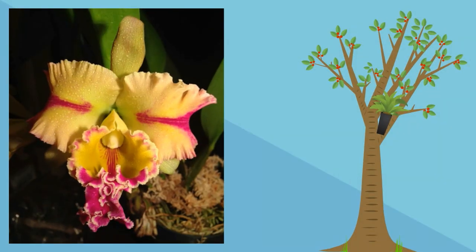Orchids are a type of flowering plant that like to make their base, or attach, to the branches of trees. They benefit by getting sunlight and the tree for the most part is unaffected.